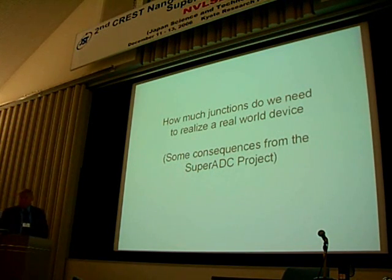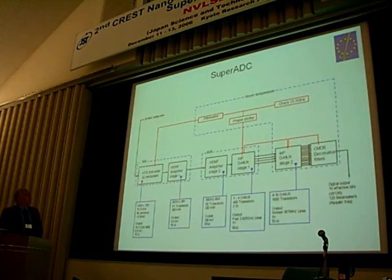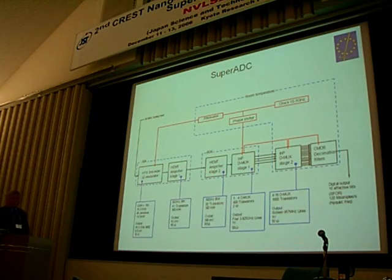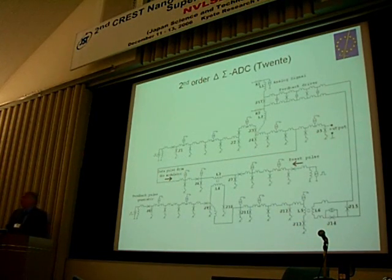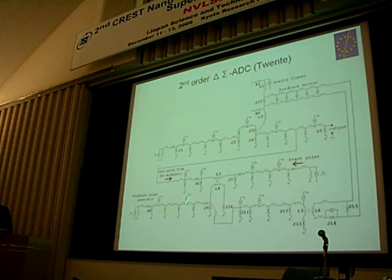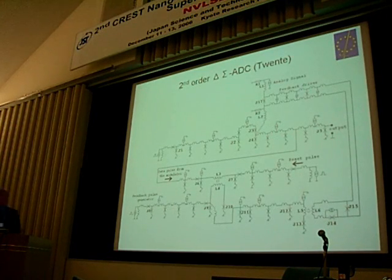So, how many junctions do we need to realize a real-world device? We had a super ADC project where we were working on a second-order HTS sigma-delta modulator, coupled to a semiconductor back-end, with the idea: a simple fast system in HTS, and a complex slow system in semiconductors. This is the design of the second-order sigma-delta modulator — it has, depending on the layout, between 40 and 60 junctions. We were not able to make this circuit so that it fully worked. Always one or two of the junctions failed.